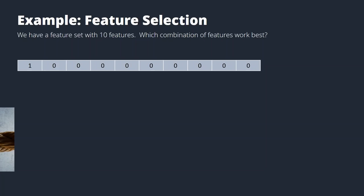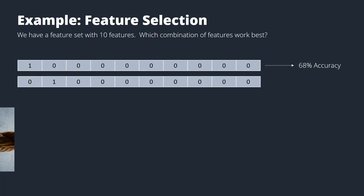So how can we do this? We can start with only one feature — let's say the first one. We train a model using only this feature, validate it with a tenfold cross-validation, and measure the accuracy. Using only the first feature, we might get 68% accuracy. Then we try the second feature — maybe 64%. The third — maybe 59%. And we continue until we've tried all ten options using only one feature. Then we try pairs of features, triples, and so on, until we've tried all combinations including all ten features.